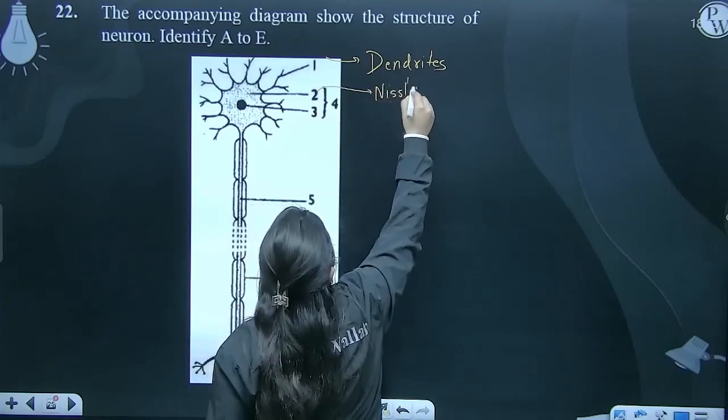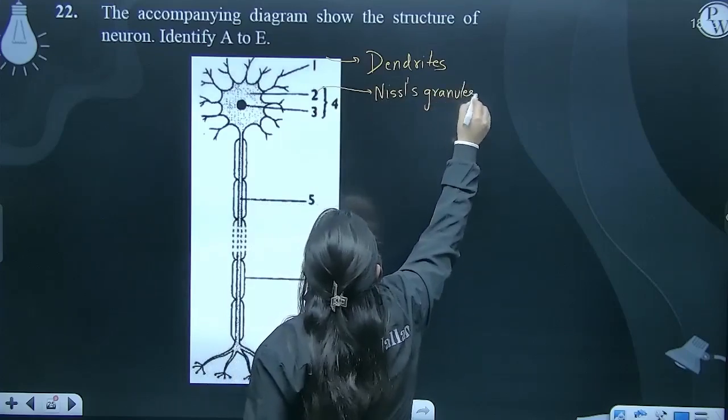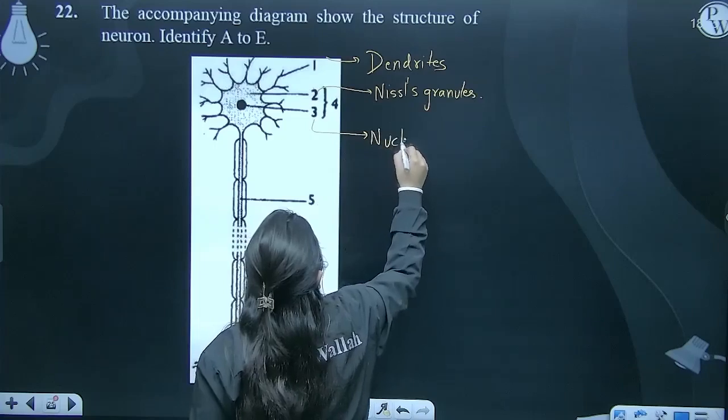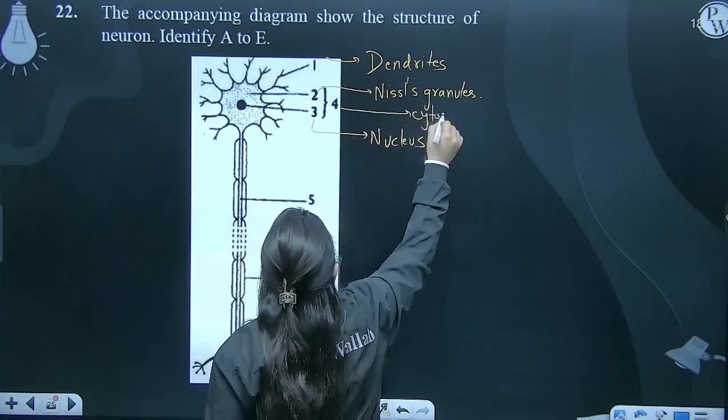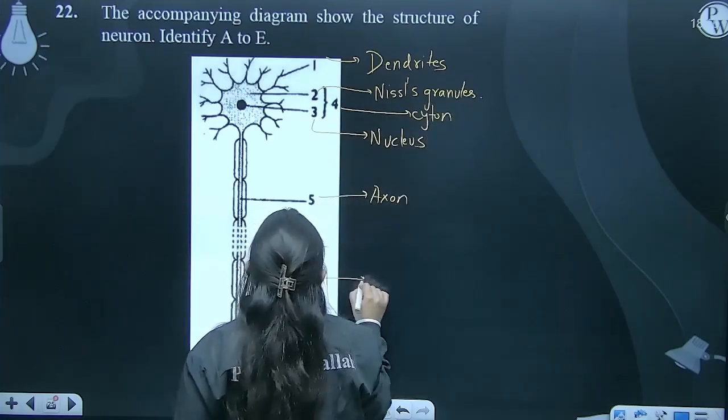Okay, third is your nucleus. Fourth is your cyton. Fifth one is your axon. Sixth is your...